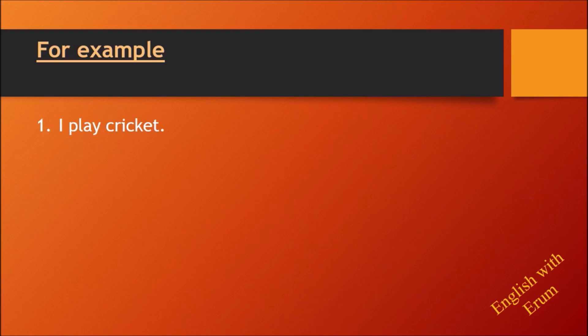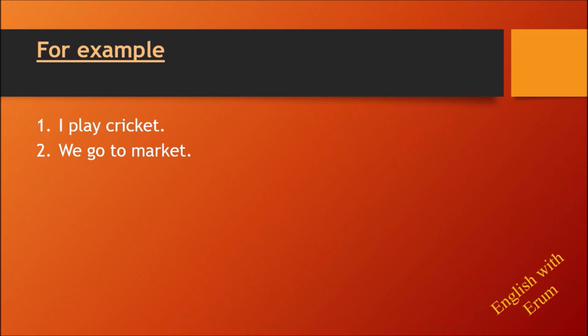Example: 'I play cricket.' Here 'I' is first person, so there is no 's' or 'es' addition to the action verb — just the first form of the verb, which is 'play'. 'Cricket' is the object. So our structure formation is complete: subject plus verb plus object. Next example: 'We go to market.' 'We' is also first person plural, so again no 's' or 'es' addition.